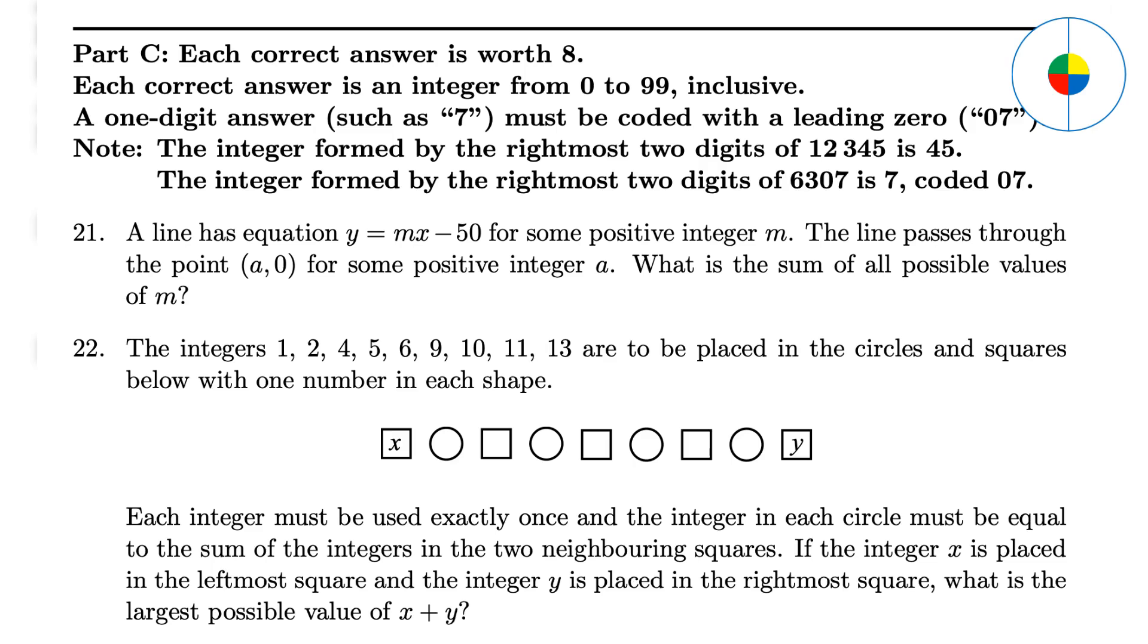Part C. Hard Questions. Question 21: Since the line passes through the point (a, 0), then 0 equals M times A minus 50 or M times A equals 50. So, M can be 1, 2, 5, 10, 25, and 50. The sum of all possible values of M is 93.